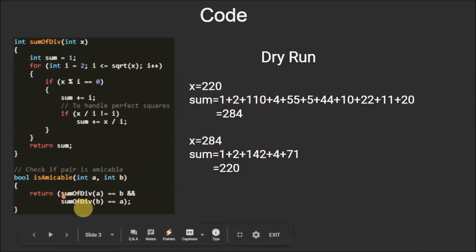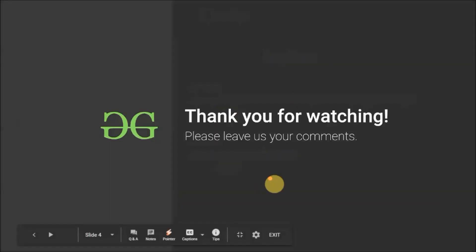So finally this return statement, that is sum of divisors of A equal equal to B and sum of divisors of B equal equal to A, this condition will return 1. So this proves that these two are amicable pair. I hope you understood the concept. And thank you for watching this video.